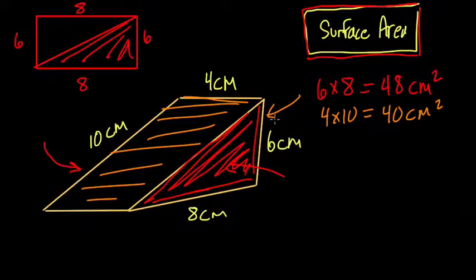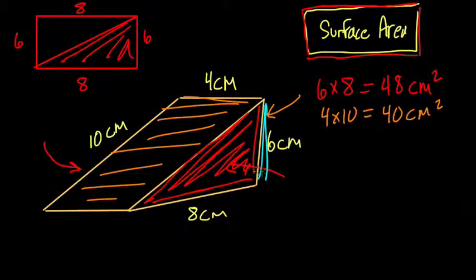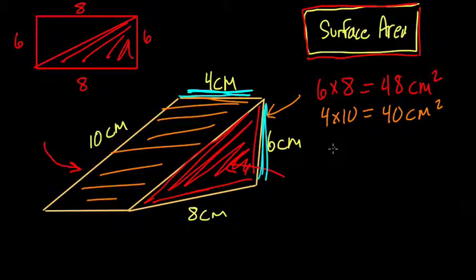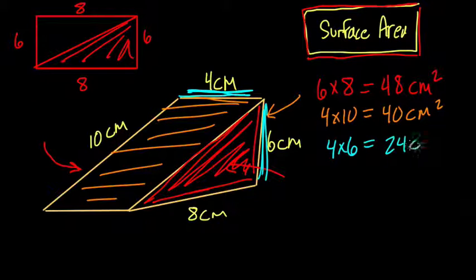And then the rectangle on this side — what's that going to equal? Well, we know that this length is 6 and this length is 4, so it's a 4 by 6 rectangle, and that's 24 square centimeters.